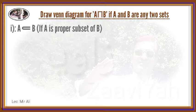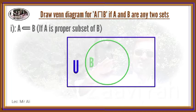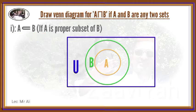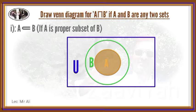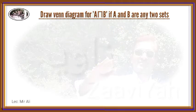The set A and the set B — the elements of set A also belong to set B. The second case is that A-Intersection-B, where set A is a proper subset of B.